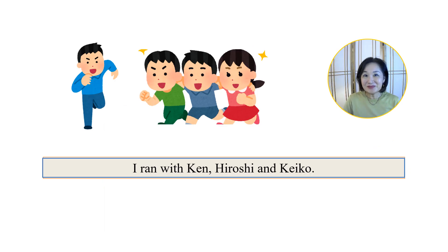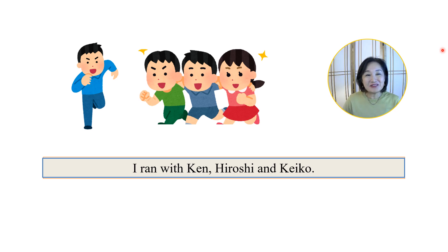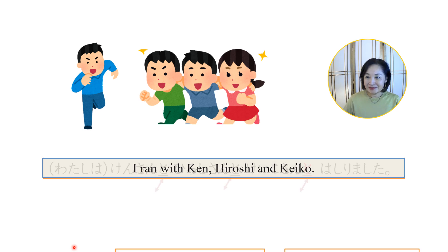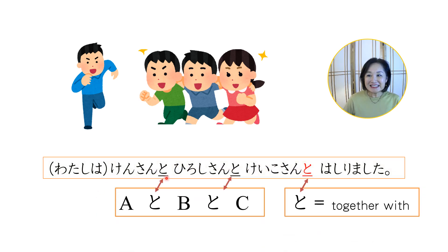Let's wrap up with a final challenge. How would you say this sentence in Japanese: 'I ran with Ken, Hiroshi, and Keiko'? The verb 'to run' in the past tense is 走りました. Please write the sentence down to see if you can use the particle と correctly. The answer is: 私は、ケンさんと、ヒロシさんと、ケイコさんと走りました。